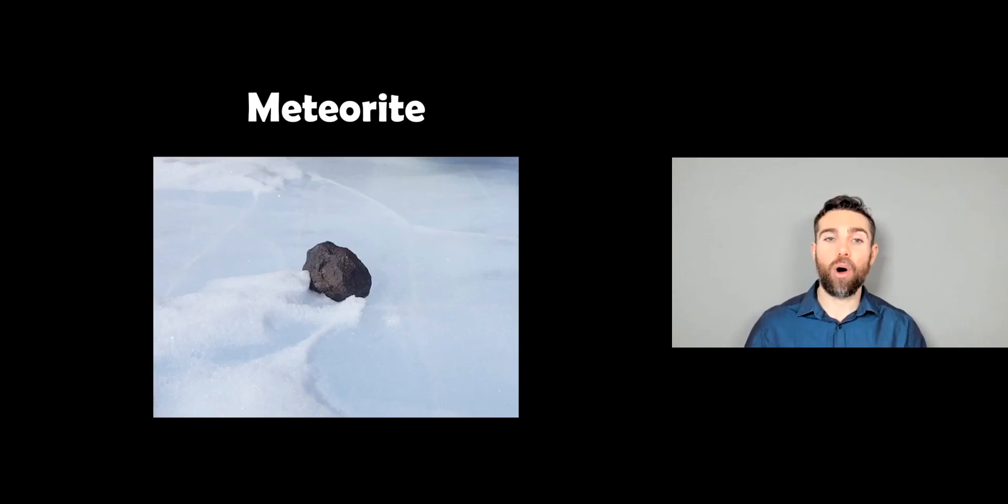Now any part of that that makes it down to the ground is then called a meteorite. So we have these three terminologies: meteoroid which is in space, meteor which is in the atmosphere of earth, and meteorite if any of it makes it down to the ground like this one here.